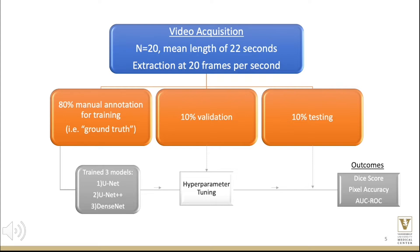We trained three established deep learning models: UNET, UNET++, and DenseNet. Multiple iterations of the models based on hyperparameter tuning were compared for optimization of our algorithms. Outcomes measured included a DICE score, other measures of pixel accuracy, and an AUC ROC. All of these outcomes will be explained further on a later slide.